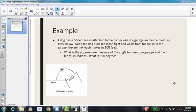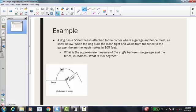All right, in this last example, we have a dog has a 50-foot leash attached to the corner where the garage and fence meet. So as you can see in the picture below, here's the corner where the fence and garage meet, and here's the leash that's being attached to my dog. So that's my radius.